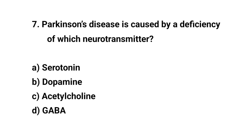Question number 7. Parkinson's disease is caused by a deficiency of which neurotransmitter? The right answer is B: Dopamine.